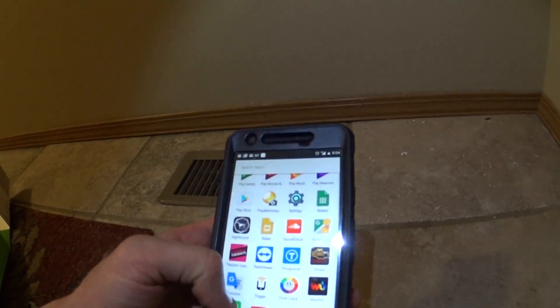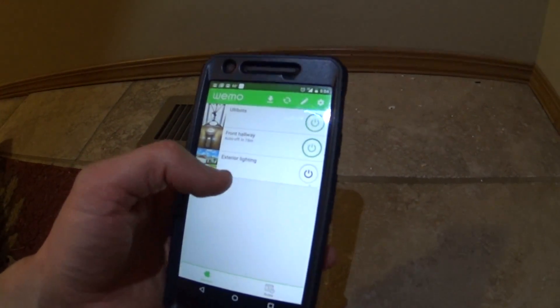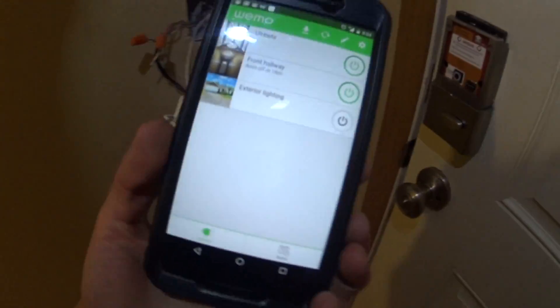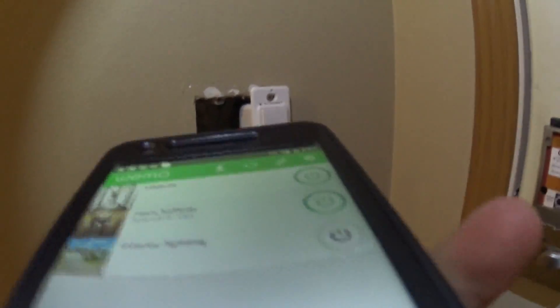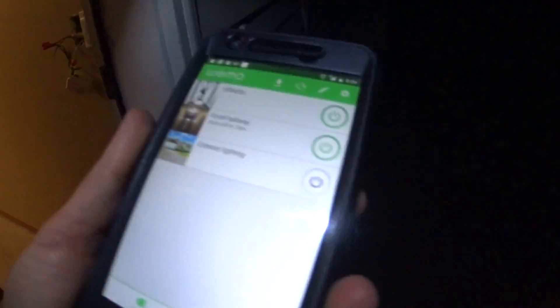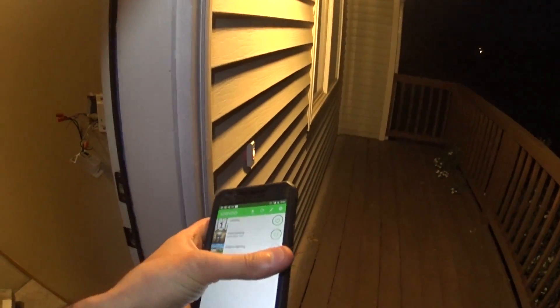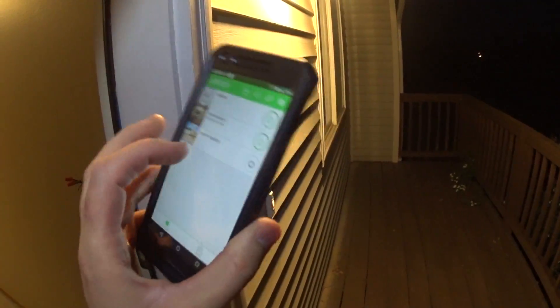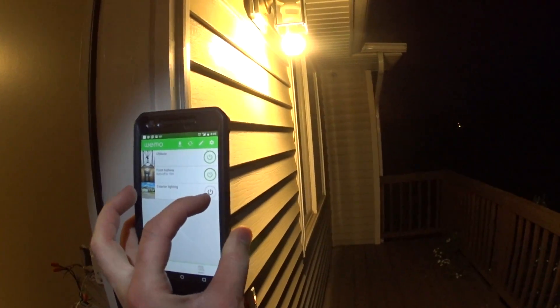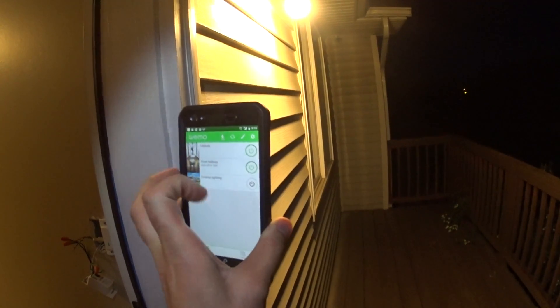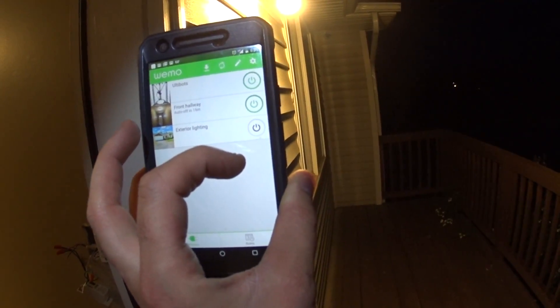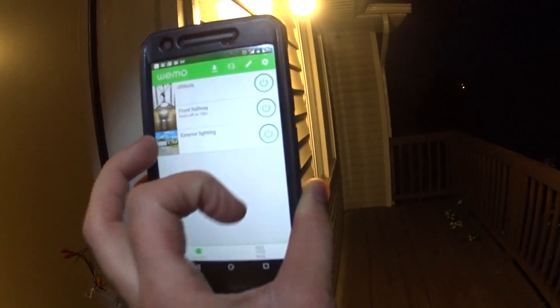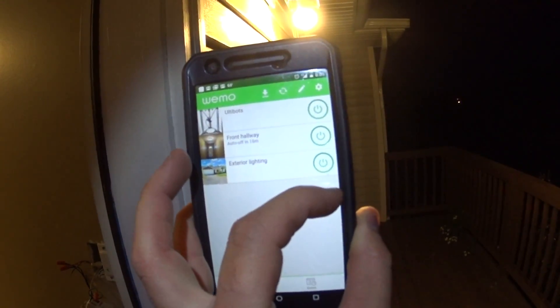I'll grab my phone and then we'll come over here to the Wemo app. You can kind of see here, so I'm gonna go outside real quick. I just want these to turn on and off at sunrise and sunset. So if I come out here and I pop that, then you can see that it came on. The Wemo app's kind of slow, so you'll see that it's on right there. So then if I hit it again, you'll see that turns off.